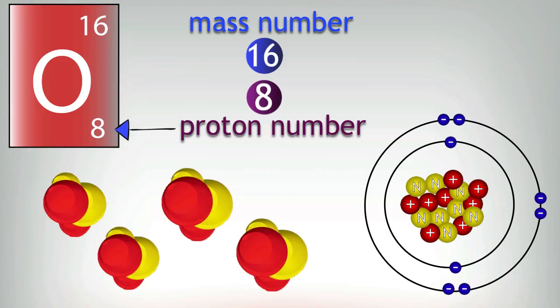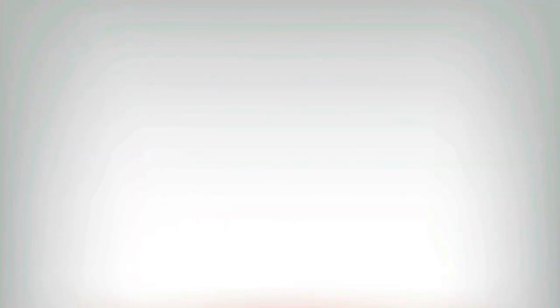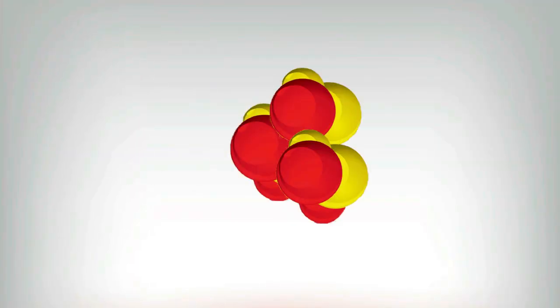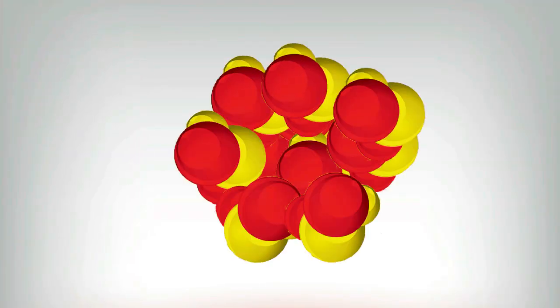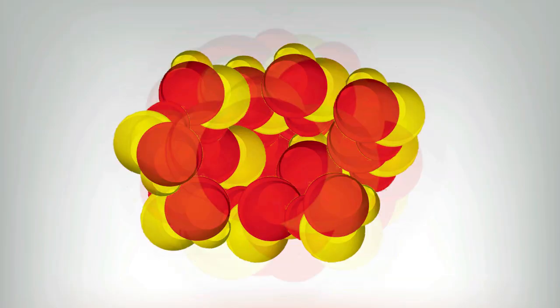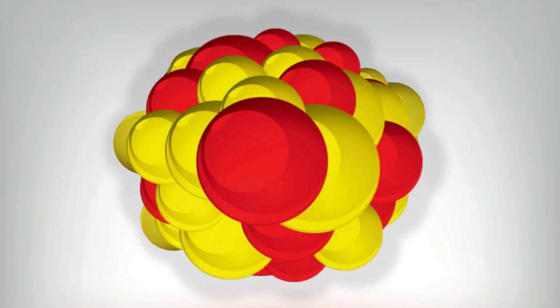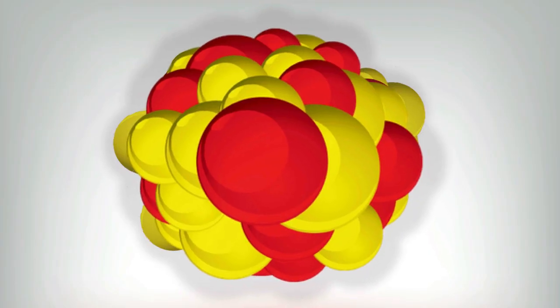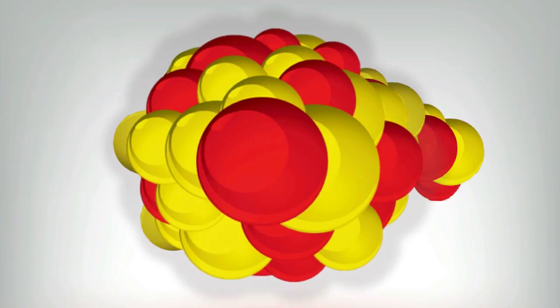This is because the easiest way to build a bigger and bigger nucleus is to add two protons and two neutrons at the same time, just like this block here. So if you can imagine if you've got a really big nucleus that's so big that it starts to become wobbly or unstable, and bang, out comes two protons and two neutrons together in an alpha particle.